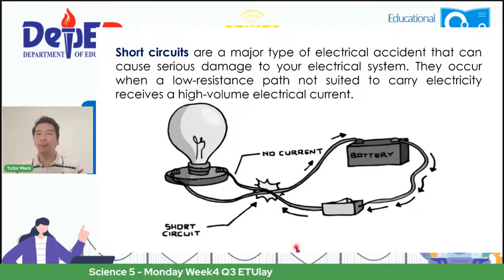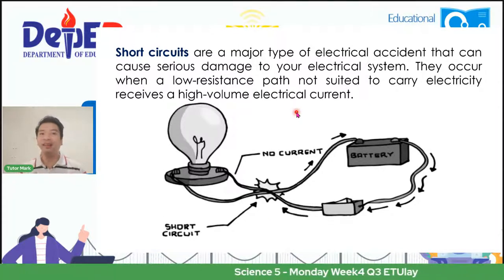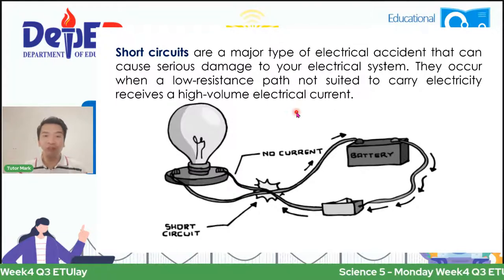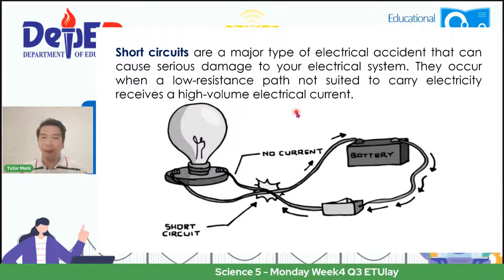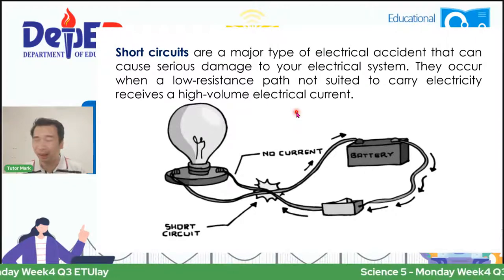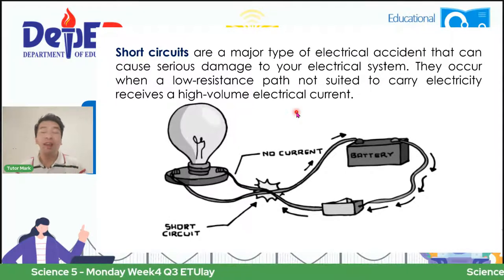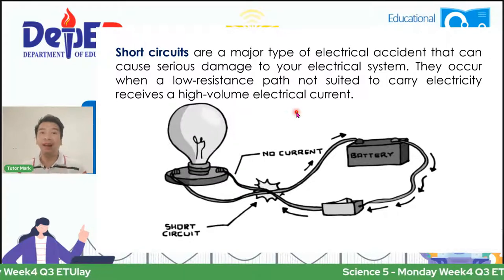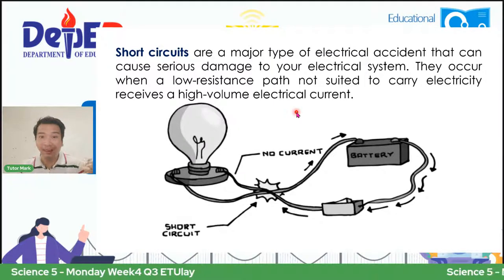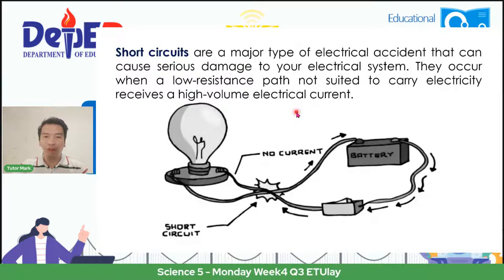Ito ang binabanggit kong problema — short circuit. Short circuits are a major type of electrical accident that can cause serious damage to your electrical system. They occur when a low-resistance path not suited to carry electricity receives a high-volume electrical current. Para maiwasan natin ang short circuit, importante na pangalagaan natin ang handling ng ating mga equipment. Halimbawa, meron kang saksakan o cord — importante na yung cord natin ay laging sinicheck kasi baka maingat-ngat na yan ng daga. Kung sakaling meron, dapat ay maayos itong i-fix.